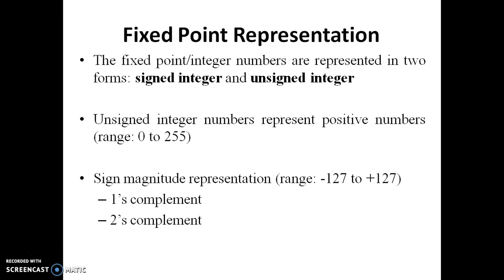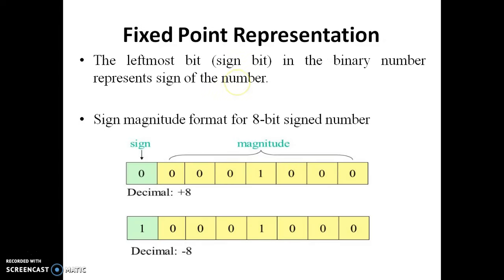First, fixed point representation. Fixed point representation is divided into two parts: signed integer and unsigned integer. Unsigned integer value is 0 to 255, meaning all the positive numbers. In signed integer, the range is minus 127 to plus 127, meaning positive as well as negative numbers.